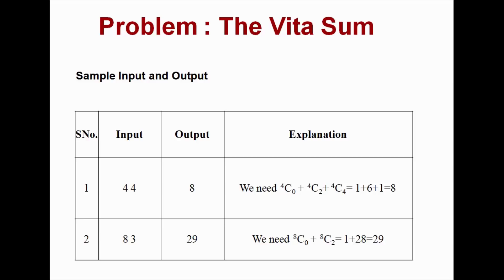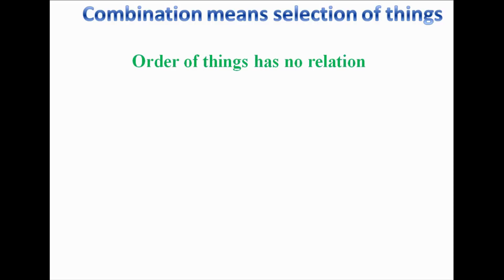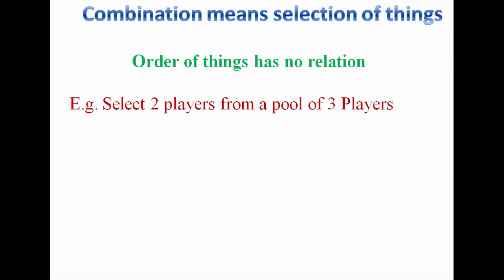Before solving this problem, we need to understand the combination formula so we can go further into the details. What is a combination? Combination means selection of things. If we have to select something, it is a combination. In a combination, the order of things has no relation — it does not depend on order.